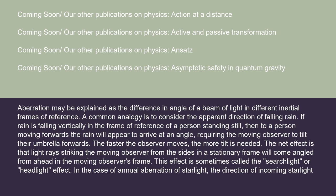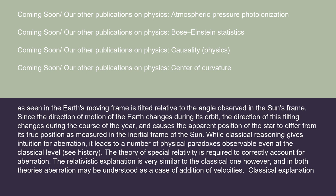This effect is sometimes called the searchlight or headlight effect. In the case of annual aberration of starlight, the direction of incoming starlight as seen in the Earth's moving frame is tilted relative to the angle observed in the Sun's frame. Since the direction of motion of the Earth changes during its orbit, the direction of this tilting changes during the course of the year and causes the apparent position of the star to differ from its true position as measured in the inertial frame of the Sun. While classical reasoning gives intuition for aberration, the theory of special relativity is required to correctly account for it. In both theories, aberration may be understood as a case of addition of velocities.